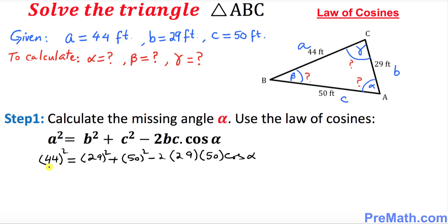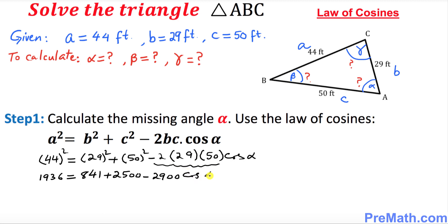Taking care of the squares: 44² = 1936, 29² = 841, and 50² = 2500. Multiplying 2 × 29 × 50 gives 2900. So we have 1936 = 841 + 2500 − 2900·cos(alpha). Adding the two quantities on the right: 1936 = 3341 − 2900·cos(alpha).